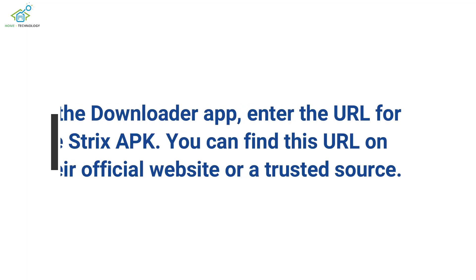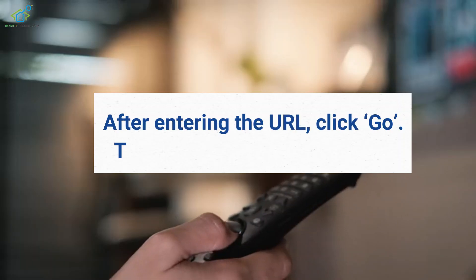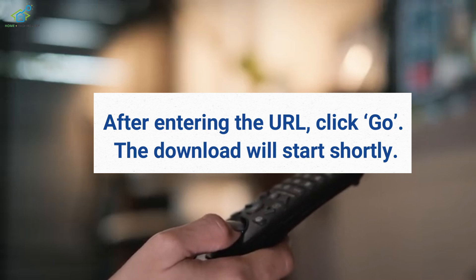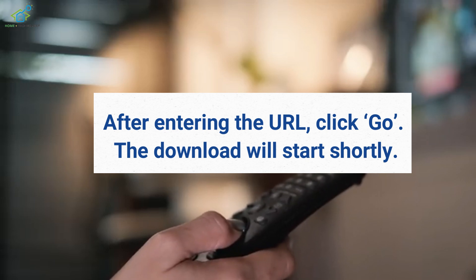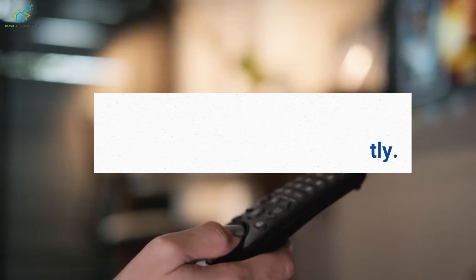Once Downloader is installed, open the app. In the Downloader app, enter the URL for the Strix APK. You can find this URL on their official website or a trusted source. After entering the URL, click Go.